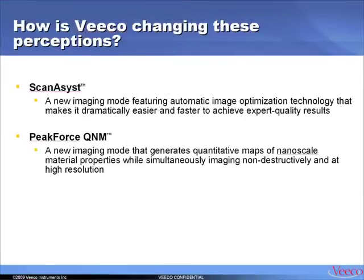We did two things to change these perceptions. One is we came out with ScanAssist. ScanAssist is a new imaging mode that features an automated image optimization technique, and by doing so we make it a lot easier and faster to achieve expert quality results. You will actually notice that in the following video the only parameter I'm going to change is the scan range — everything else is adjusted completely automatically by the ScanAssist algorithm.